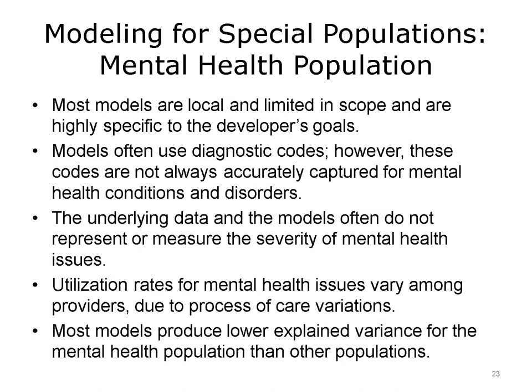Another special population requiring extra attention is the population with mental health problems. Most models developed for this population are local and limited in scope, often highly specific to the developer's goals. Models usually use diagnostic codes; however, these codes are not always accurately captured for mental health conditions and disorders. The underlying data and models often do not represent or measure the severity of mental health issues. Utilization rates for mental health problems vary among providers due to variations in the process of care, and most models produce lower explained variance for the mental health population than other populations.